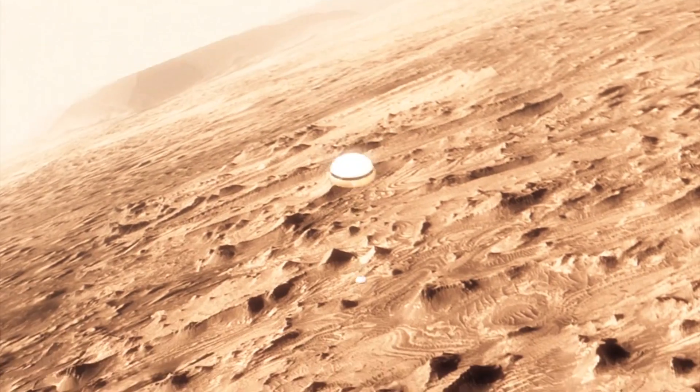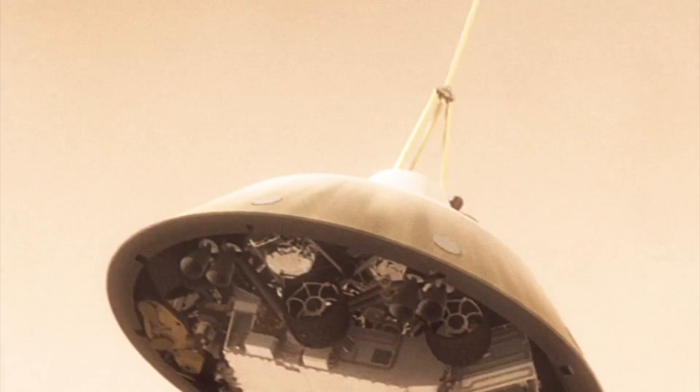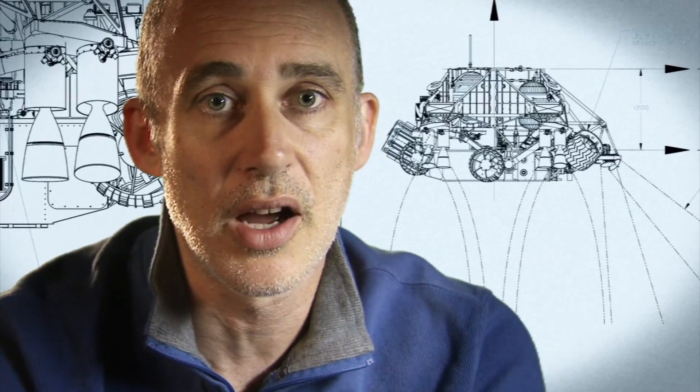This big, huge parachute that we've got, it will only slow us down to about 200 miles an hour, and that's not slow enough to land. So we have no choice, but we've got to cut it off and come down on rockets.